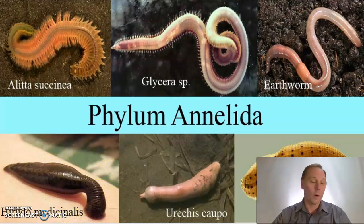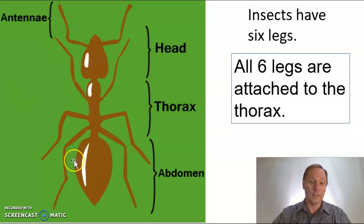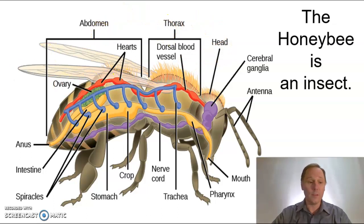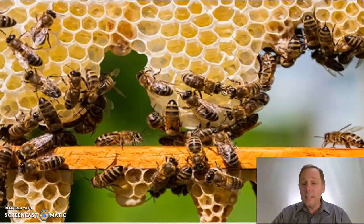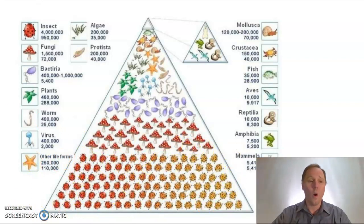All right, so we've gone over all these different things that have no legs. Let's get into something that has legs, and that is insects. Insects are known for having six legs. They also have three body parts: a head, a thorax, and an abdomen. All six legs attach to the thorax. Insects make up most of the living things on this planet — this whole bottom part of the pyramid is all insects.